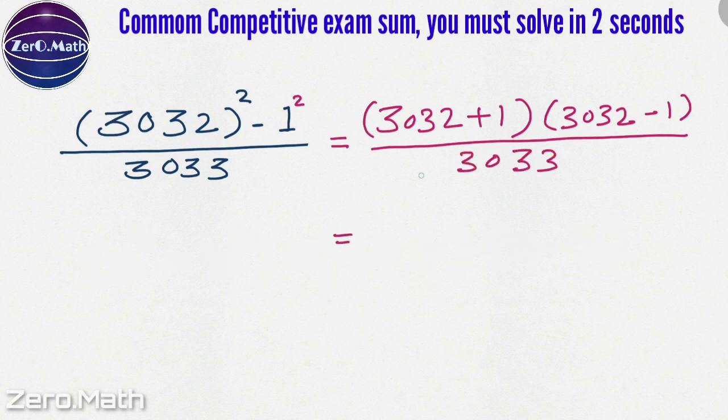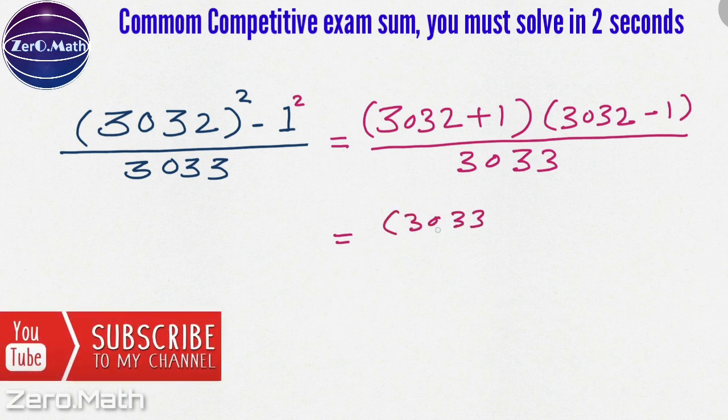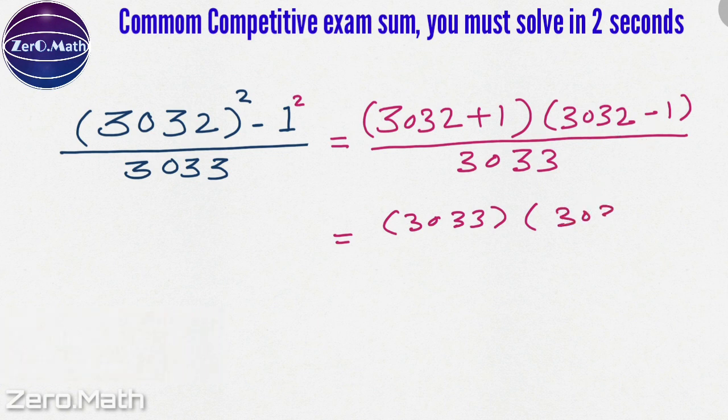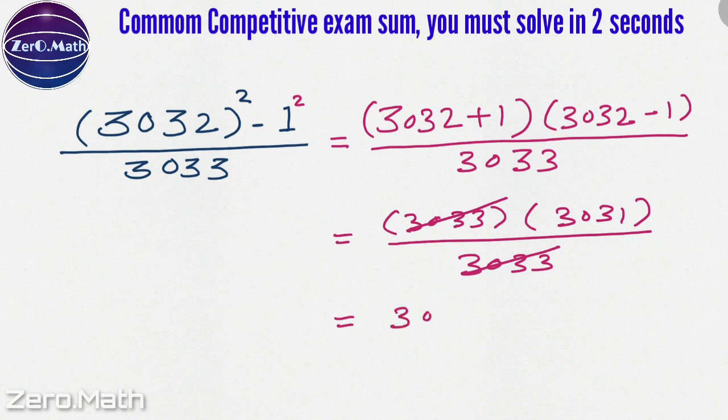Let's quickly solve this equation. 3032 plus 1 is 3033 and 3032 minus 1 is 3031 divided by the number at denominator that is 3033. Now, this 3033 will cancel out and we will get 3031 as the answer.